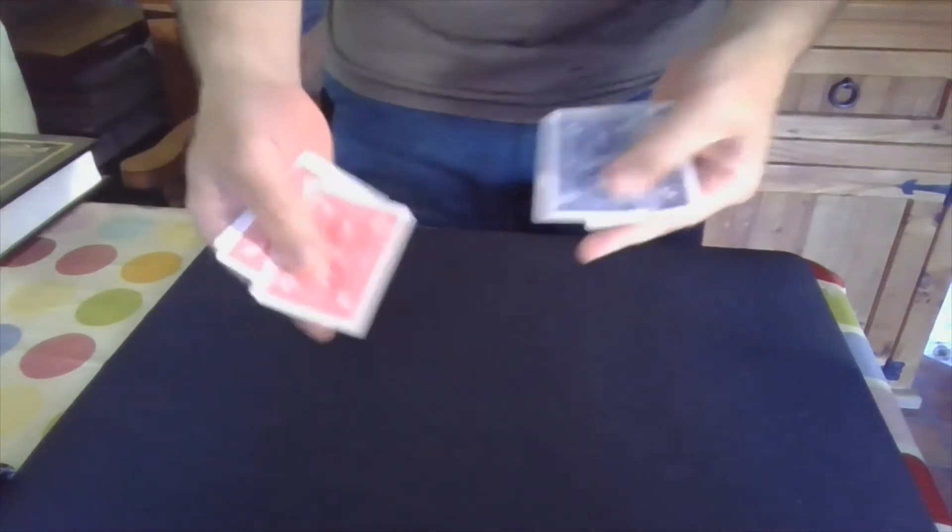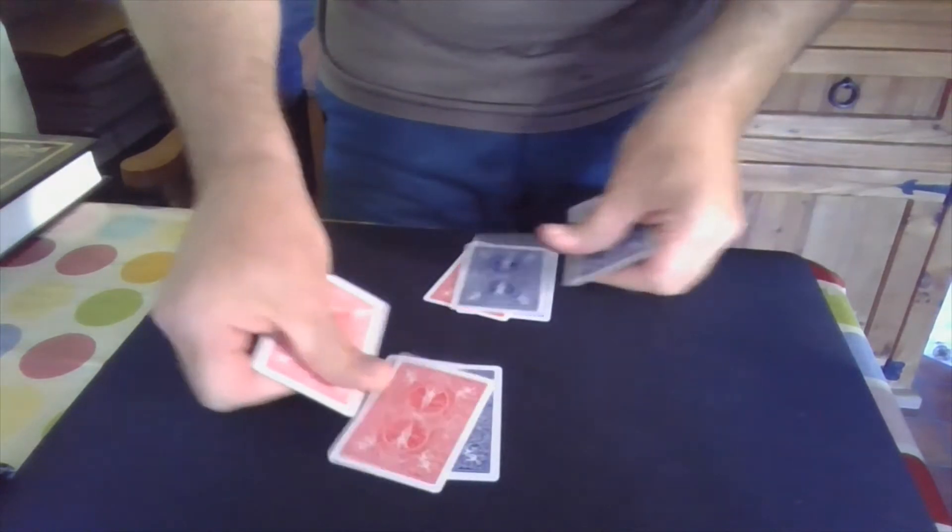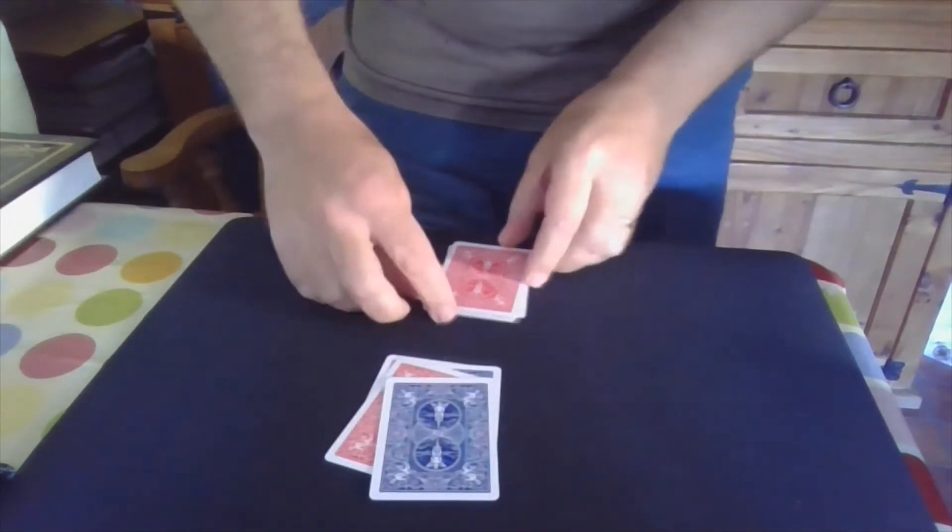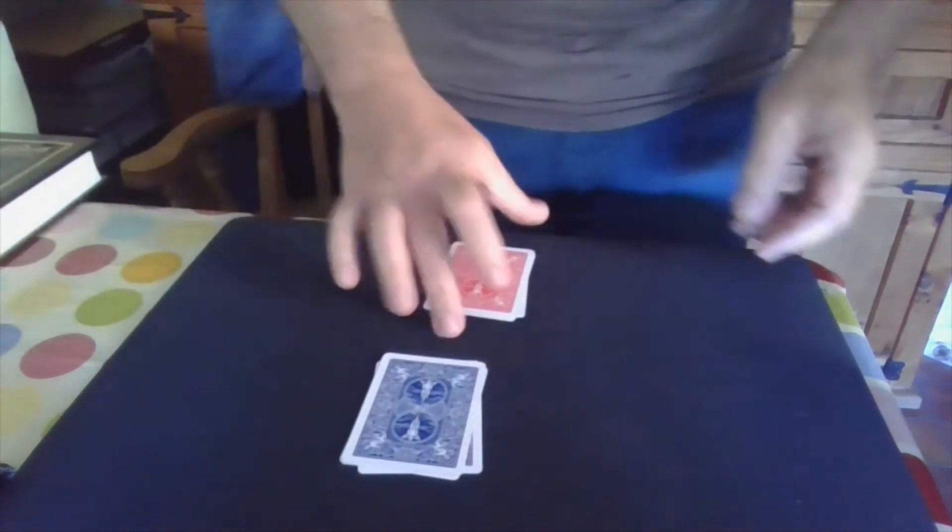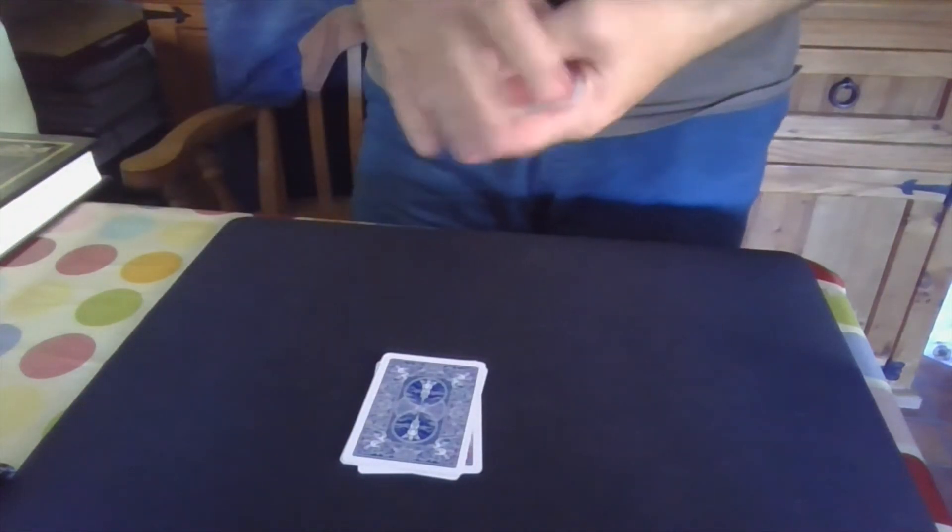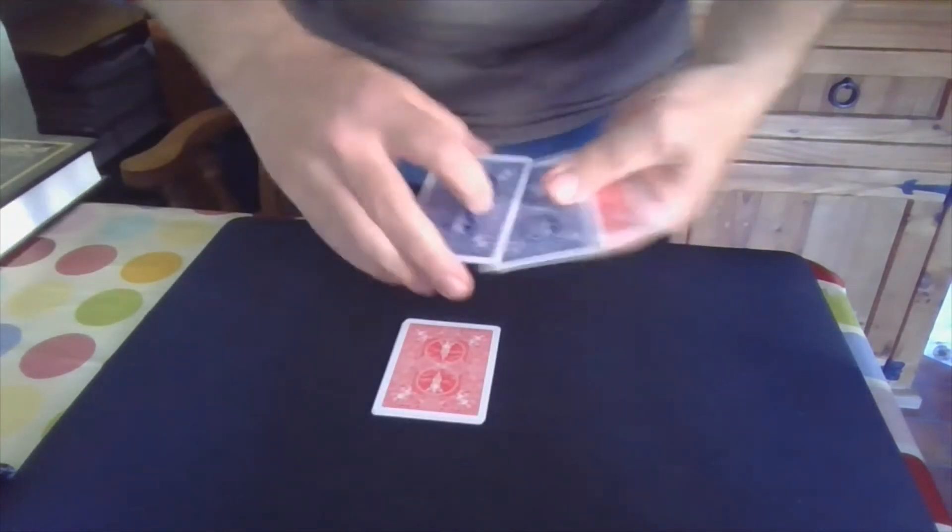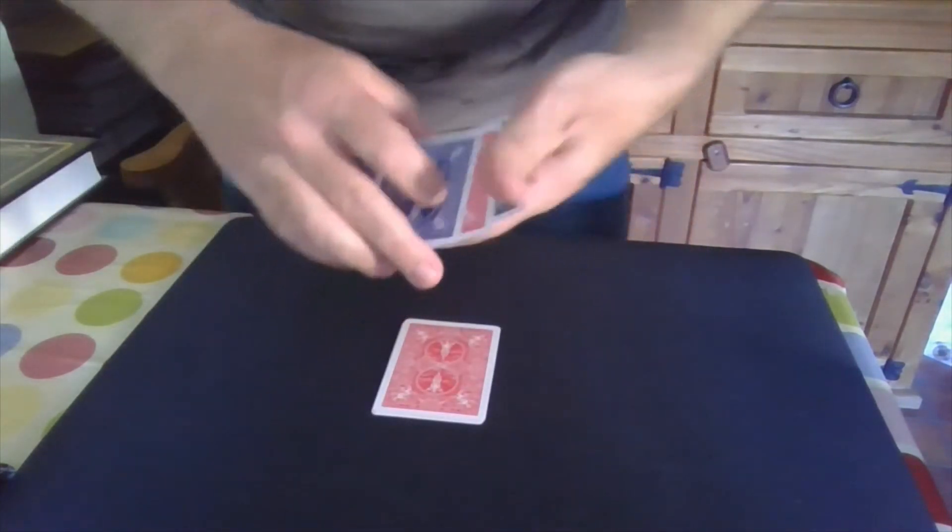So the idea is you take the cards and you alternate them, making two new piles each with four cards but two of them are red, two of them are blue. So this one here is the red blue red blue pile whereas this one here is the blue red blue red pile.